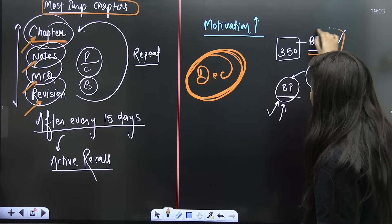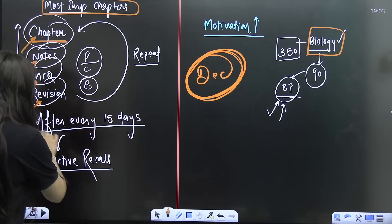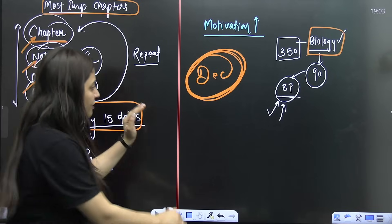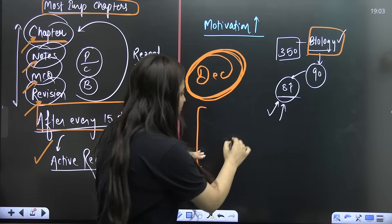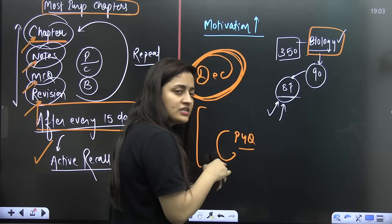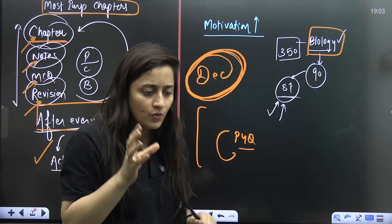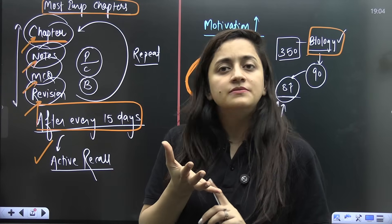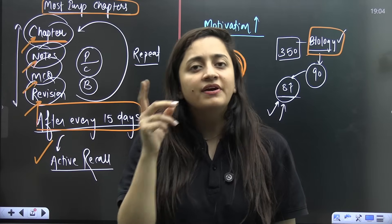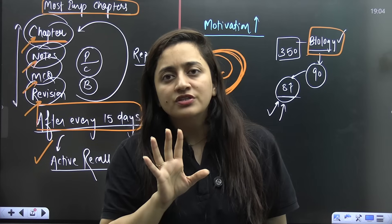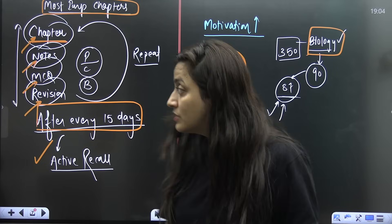For biology, we are not going to take any risk — revise everything, study it every day. After every 15 days, there should be an active review: whatever you have completed — a full chapter or partial — start MCQ practice of that chapter after 15 days. Don't start with notes; start MCQ practice. For example, the chapter Respiration in Plants may take five hours to learn, but during revision, if you've done it well, you only need 20 minutes.